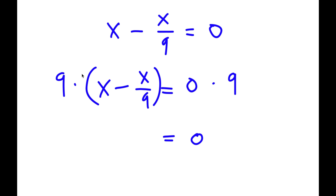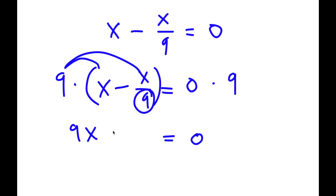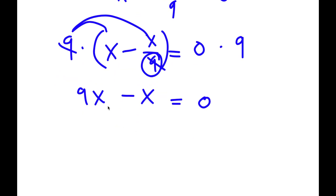The reason I multiplied by 9 on both sides is to get rid of this denominator. When I multiply 9 with x minus x over 9, the 9 distributes: 9 times x is 9x, and 9 times negative x over 9, the two 9s cancel out, leaving negative x. So now I have 9x minus x is equal to 0, which gives 8x is equal to 0.